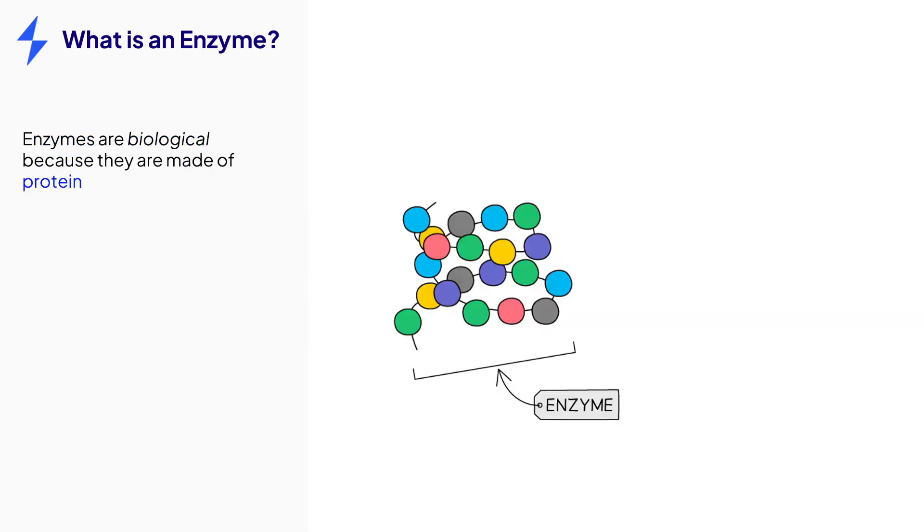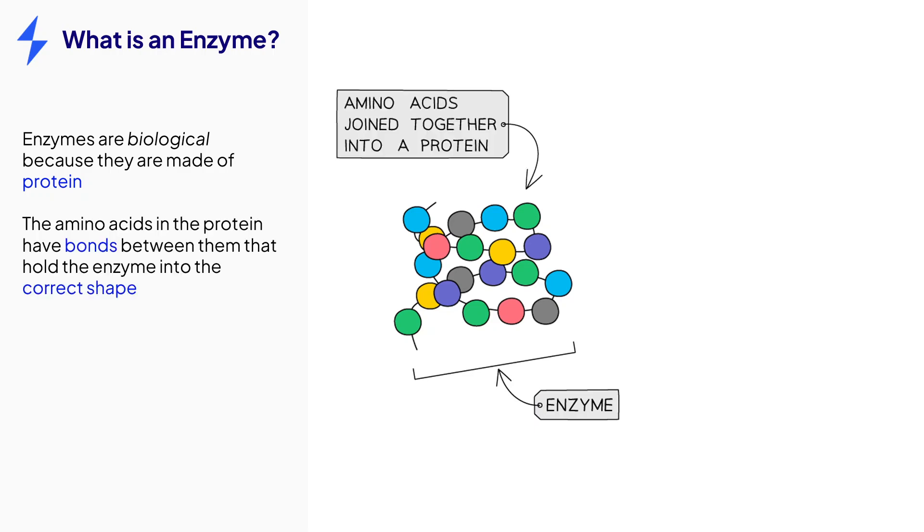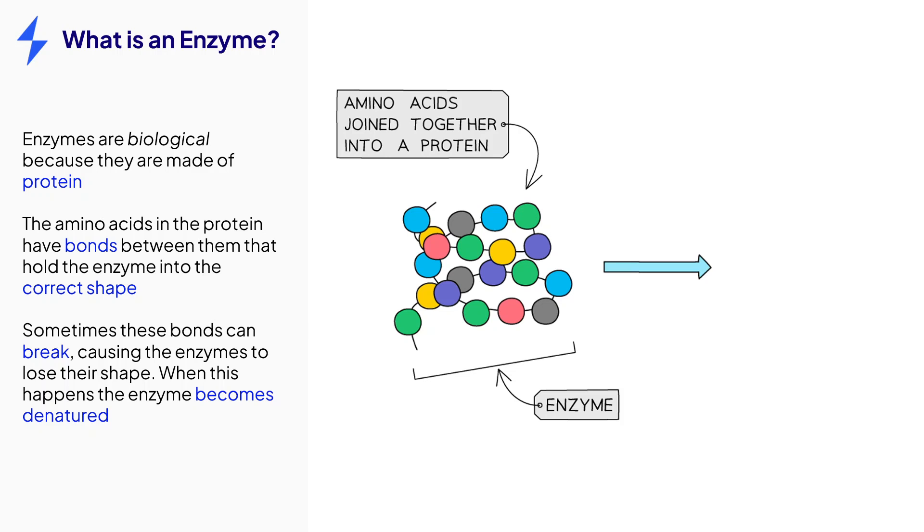Enzymes are called biological catalysts because they are made from protein. The proteins contain amino acids that are held in the correct shape by bonds. These bonds can break in certain conditions, such as changes in temperature and pH. When this happens, the enzyme loses its shape and becomes denatured.